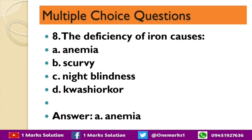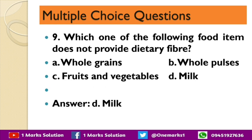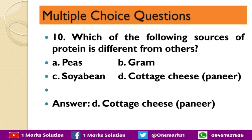The deficiency of iron causes — anemia, scurvy, night blindness, or kwashiorkor? The correct answer is anemia. The next question: which one of the following food items does not provide dietary fiber — whole grains, whole pulses, fruits and vegetables, or milk? The correct answer is milk.